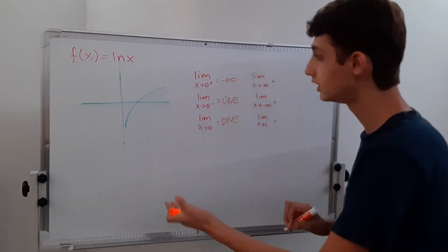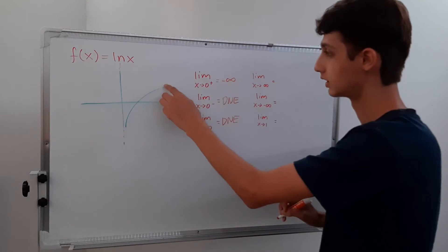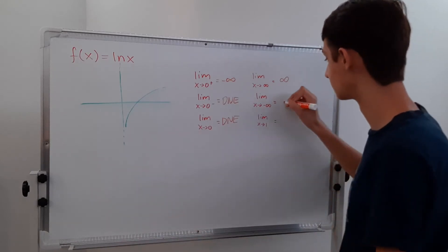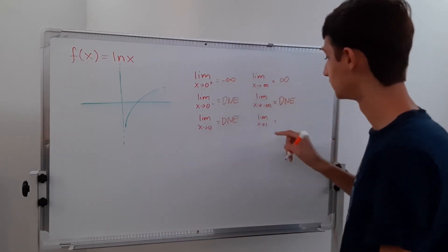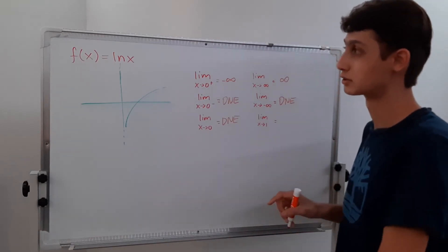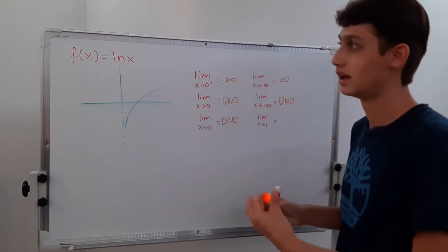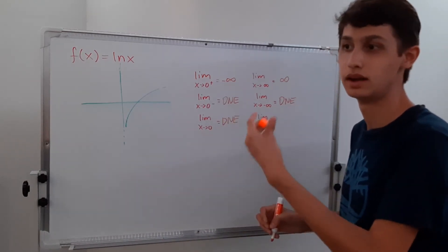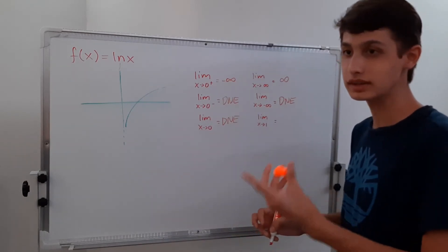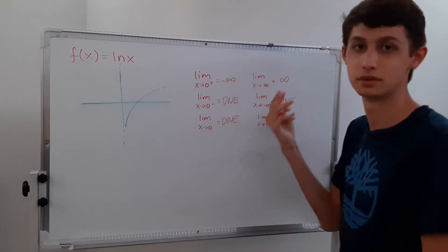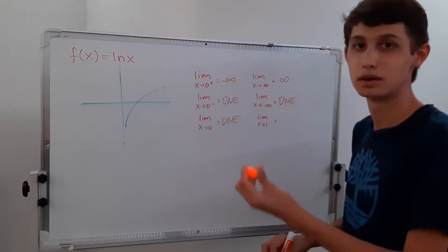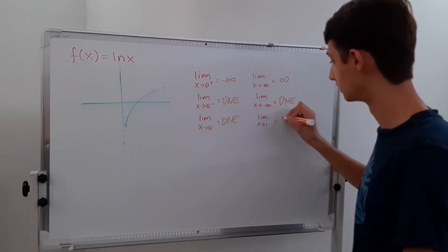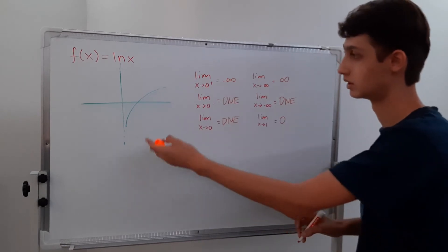The limit as x approaches infinity of ln(x) goes to infinity — you can see it goes all the way to infinity. And negative infinity again does not exist. Now we just have the limit as x approaches one of ln(x). Well, ln(1) equals y means e to the y equals one. E to what power gives you one? That's zero. So the limit of ln(x) as x approaches one is zero.